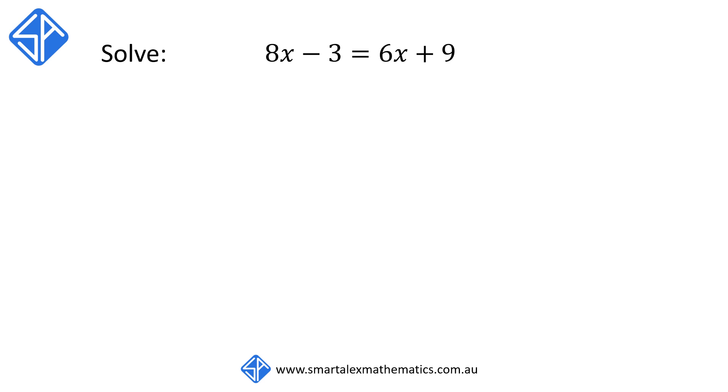For our first example we're going to be solving the equation 8x minus 3 is equal to 6x plus 9. This equation has got the pronumeral x on the left and the right hand side.